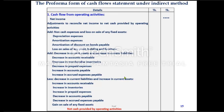The pro forma form of the cash flow statement under the indirect method. First: Cash Flow from Operating Activities. Net income is adjusted to reconcile net income to net cash provided by operating activities.